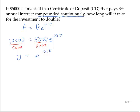Now converting this to its logarithmic form, since the base is e, we would write the natural log of 2 is equal to 0.03 t.